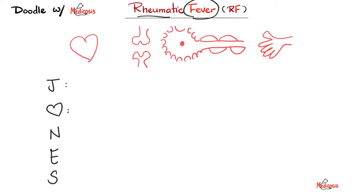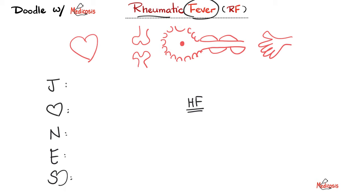The 'O' (heart shape) stands for carditis — inflammation of all three heart layers: endocarditis, myocarditis, and pericarditis, which can cause symptoms of heart failure if severe. The 'N' is for subcutaneous nodules similar to rheumatoid arthritis nodules — painless. The 'E' is erythema marginatum, and the 'S' is Sydenham's chorea.